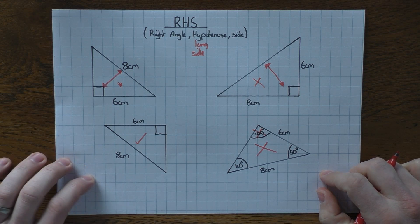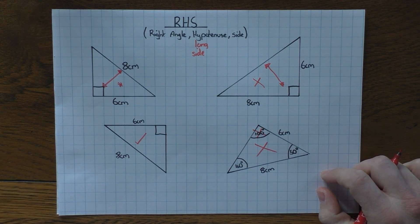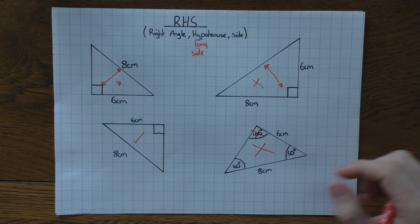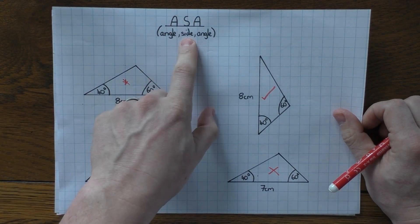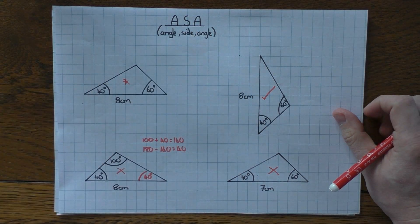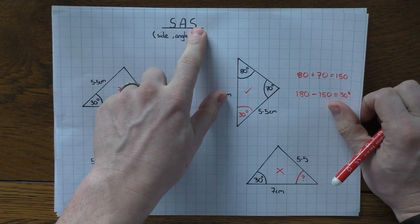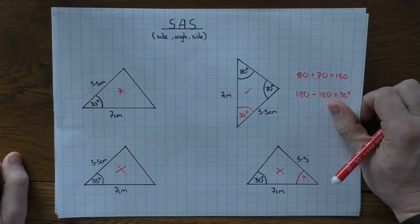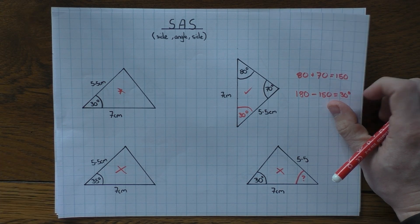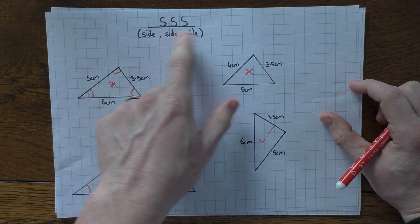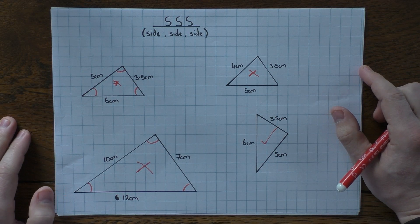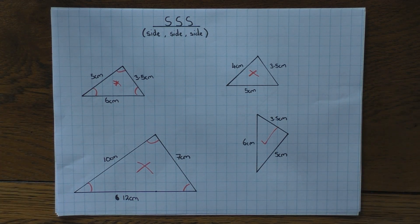To recap the four rules for proving congruent triangles: RHS — right angle, hypotenuse, and a side; ASA — any two angles and any side; SAS — side, angle, side, where the angle must be between the two sides (you might need to work out a missing angle); and SSS — all three sides the same. Hopefully that helps you with congruent triangles and congruent shapes in general. Thanks for watching.